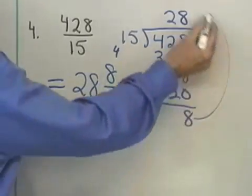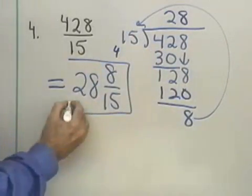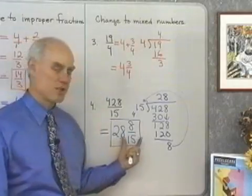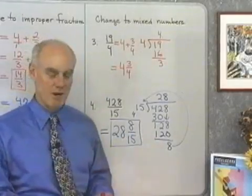So, I take this 8 over this 15, that's the 8/15. So, I can change improper fractions into mixed numbers by doing this division right here.